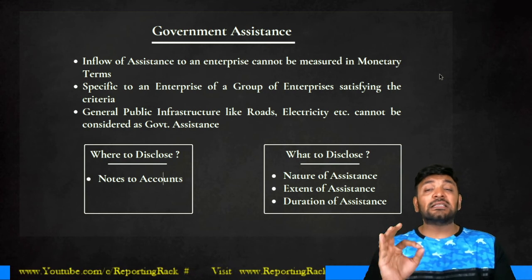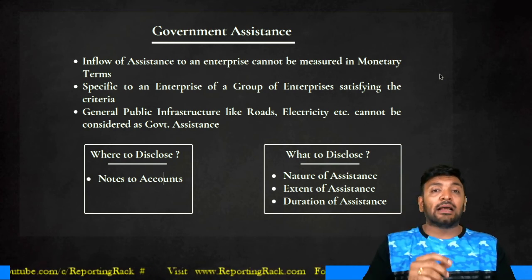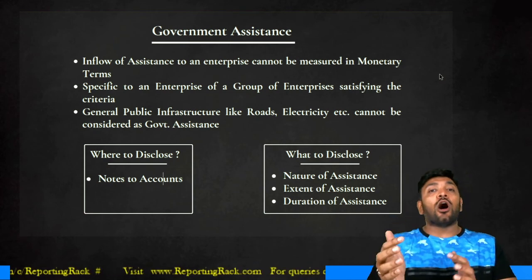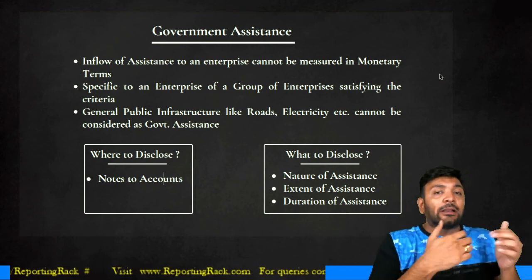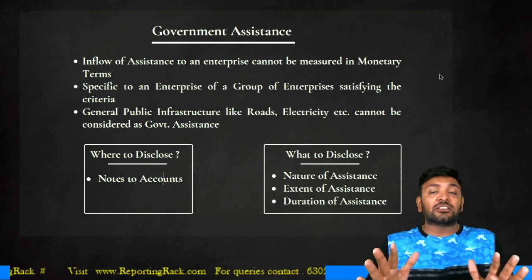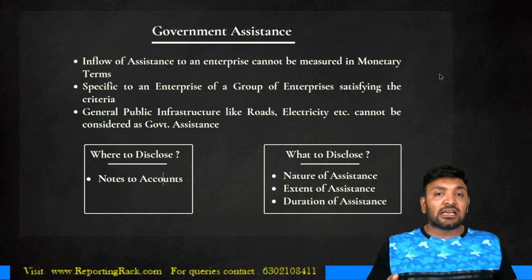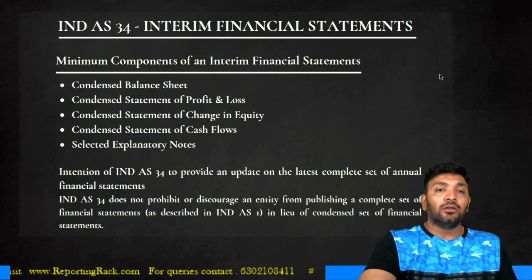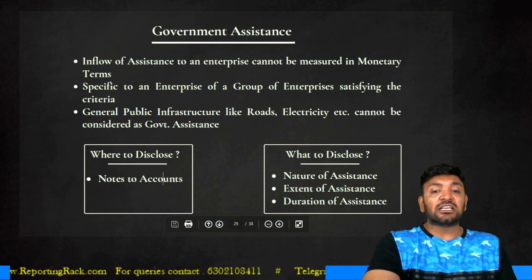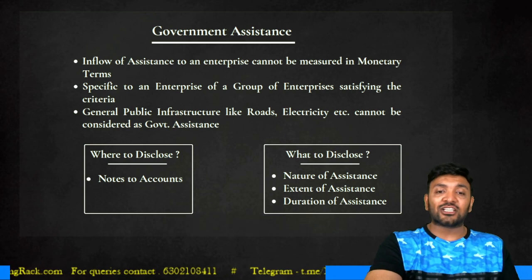To summarize: government assistance is where the inflow cannot be measured in monetary terms, it is specifically provided to the enterprise or a group of enterprises it belongs to, and it is not general public infrastructure. This brings us to the end of the discussion on Ind AS 20, which deals with government grants.